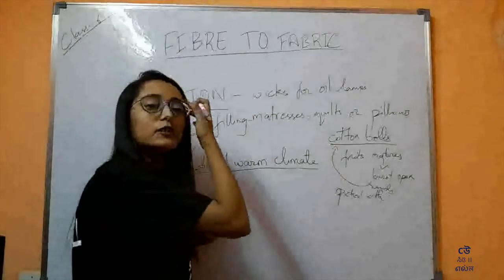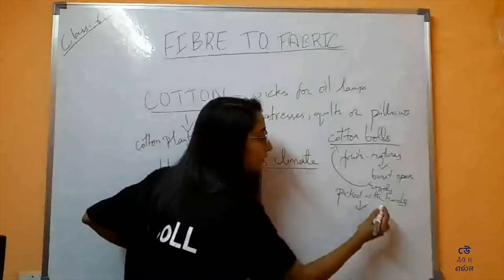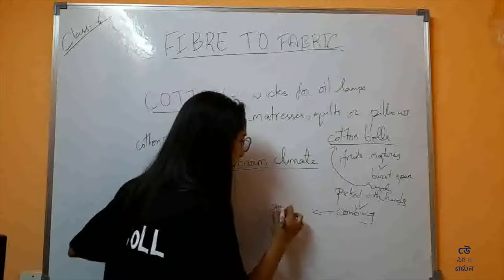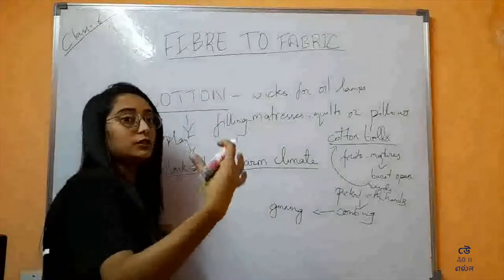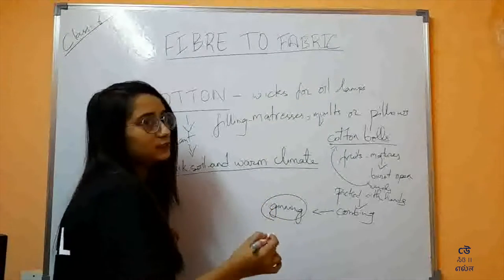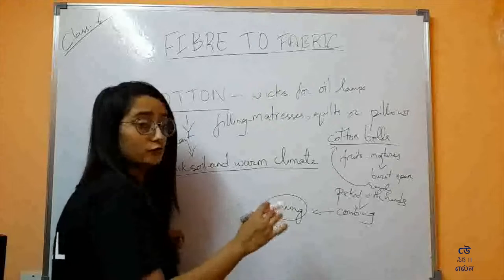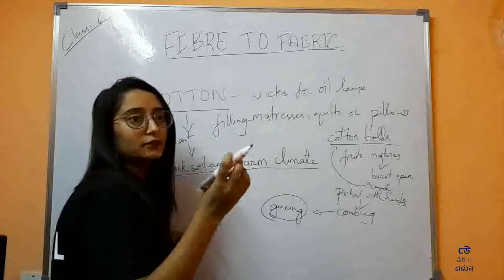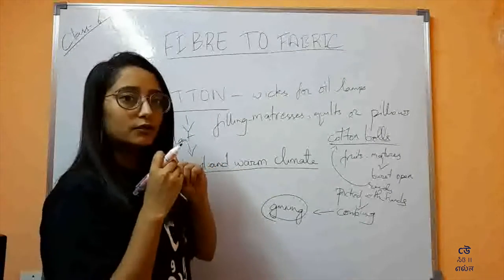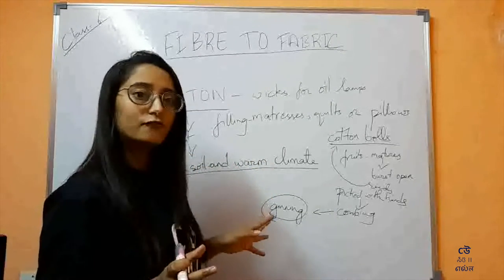As we have got the cotton balls from the cotton plant and picked them by hand, after that the cotton fiber is separated from the seeds by combing. This process is called ginning. So the process in which the cotton fiber is separated from the seeds by combing is called ginning. After ginning, the cotton is used for filling mattresses or various other purposes.